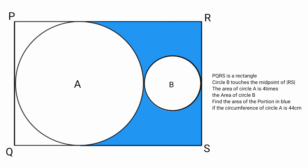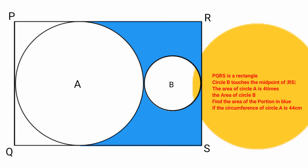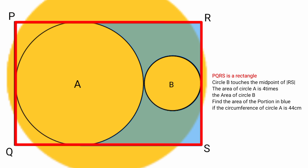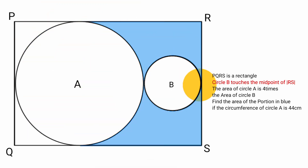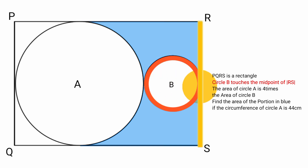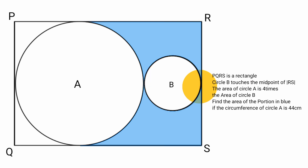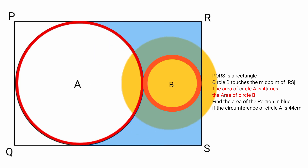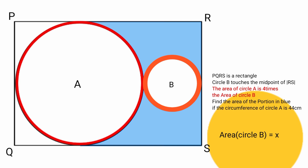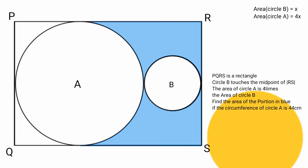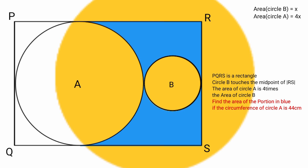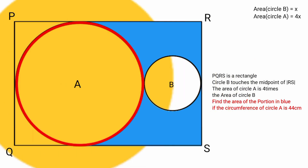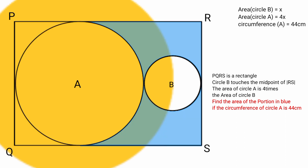Hello viewers, welcome back to another interesting maths question. Today we have this question here: shape PQRS is a rectangle. The point at which circle B touches line RS is the midpoint of line RS, and the surface area of circle A is four times the surface area of circle B. So if the area of circle B equals x, then area of circle A equals 4x. Find the area of the blue portion, given that the circumference of circle A is 44 centimeters.